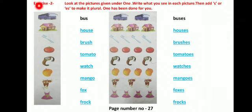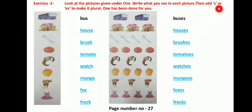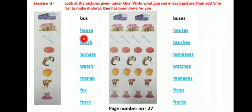Now see here on page number 27. Let's see Exercise 2. Look at the picture and write what you see, then add S or ES to make it plural. Where S is needed, add S behind it; where ES is needed, add ES to make plural.